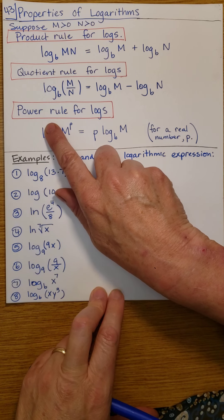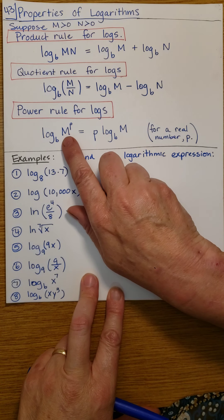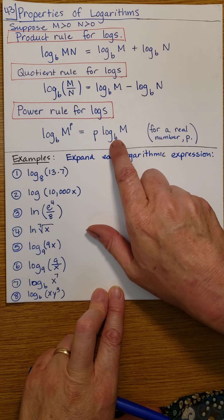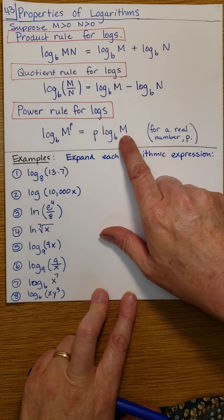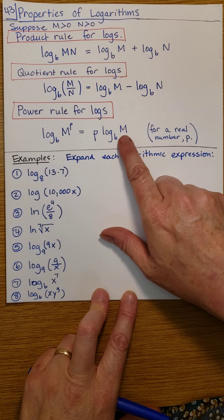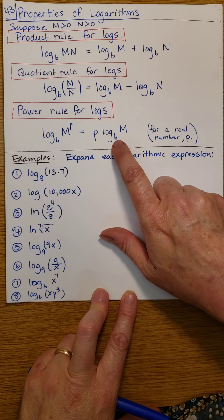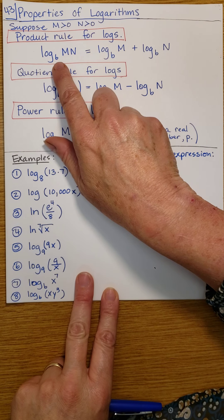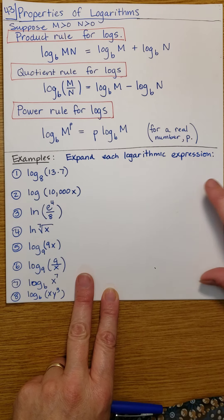And for power, if you're taking the log of something raised to a power, then you can take that power out front and multiply it by the log of your base. When I say base, I mean what's underneath the exponent, not the base of the logarithm. Notice that the base of the logarithm does not change for these properties.